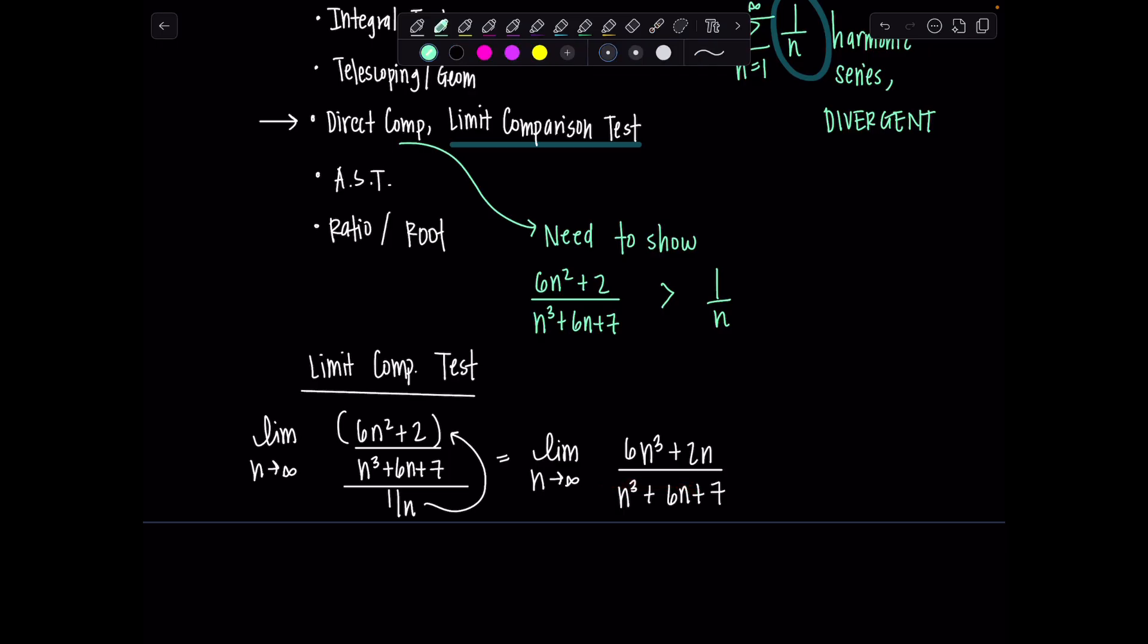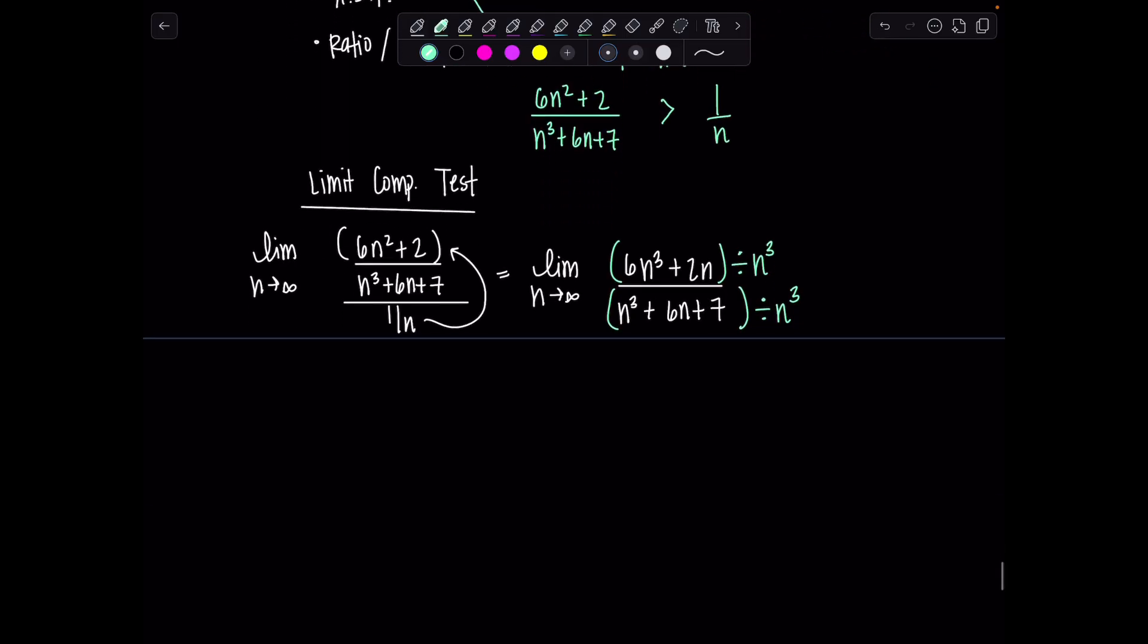This is not differentiable, right? The terms of a series are not differentiable. So I'm going to instead divide by the highest power of n in the numerator and denominator. No pre-calc shortcuts. We are in calc, but you can use them to verify that you did the limit correctly at the end. So we've got the limit. n goes to infinity. We'll have a 6 plus 2 over n in the numerator.